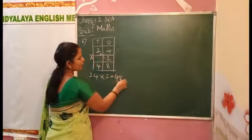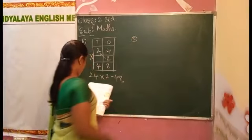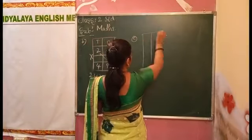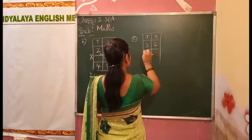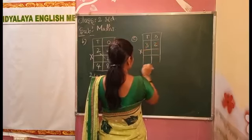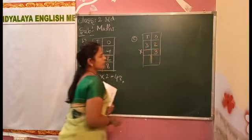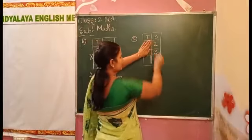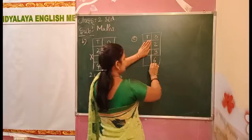Twenty-four into two equal to forty-eight. This is called product. Next, C: thirty-two. Ones, tens. Thirty-two into three. First you have to multiply with the two. Three twos are six.